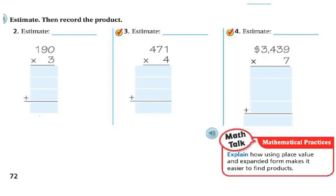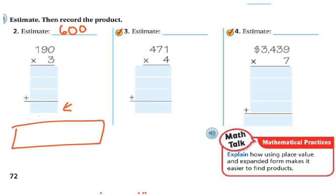So they want us to estimate. 190 is close to 200, and I know 200 times 3 is going to be 600, because 2 times 3 is 6. So my answer here should be close to 600. So again, I'm going to actually do it in the bar model because I think it'll be easier for some of you. This is 3 digits, so I'm going to break my bar into 3 parts — I'm multiplying all 3 of these numbers by 3. In my hundreds place I have 100, in my tens place I have 90, and then in my ones place I have nothing, actually.